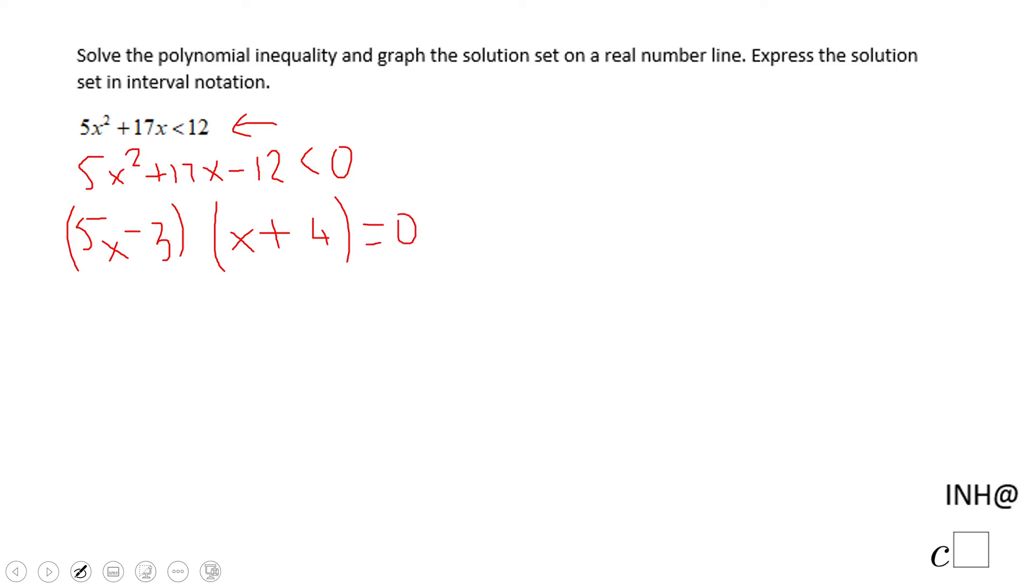I'm going to make it equals to zero because I want to find out when this polynomial is equals to zero, and then I'm going to use zero product property. 5x - 3 = 0 and x + 4 = 0.